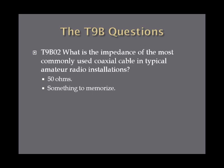What is the impedance of the most commonly used coaxial cable in typical amateur radio installations? The answer is 50 ohms, and you should probably just memorize this one. There are a bunch of reasons why it is 50 ohms — one of the biggest of which is they just chose it to be 50 ohms. So 50 ohms is the impedance of the most commonly used coaxial cable in typical amateur radio installations.